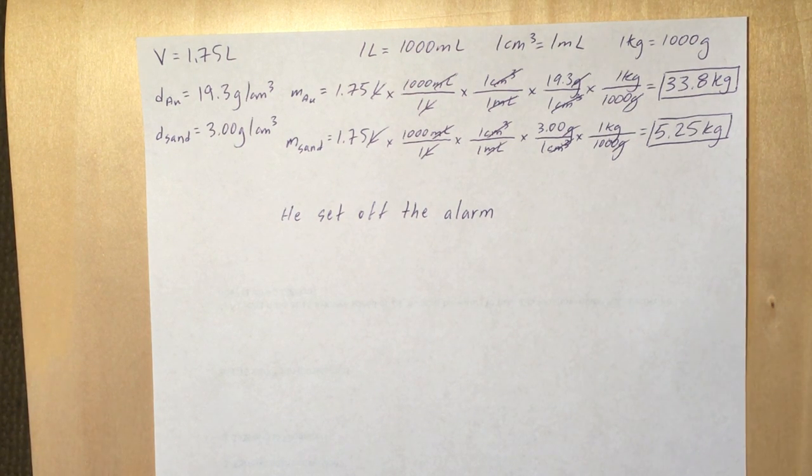So now we're going to go back to the density and use that as a conversion factor to get from cubic centimeters to grams. And I've done one more step to convert it from grams to kilograms because kilograms to me is easier to use, especially in those big numbers as opposed to grams. I can wrap my brain around that number a little easier.